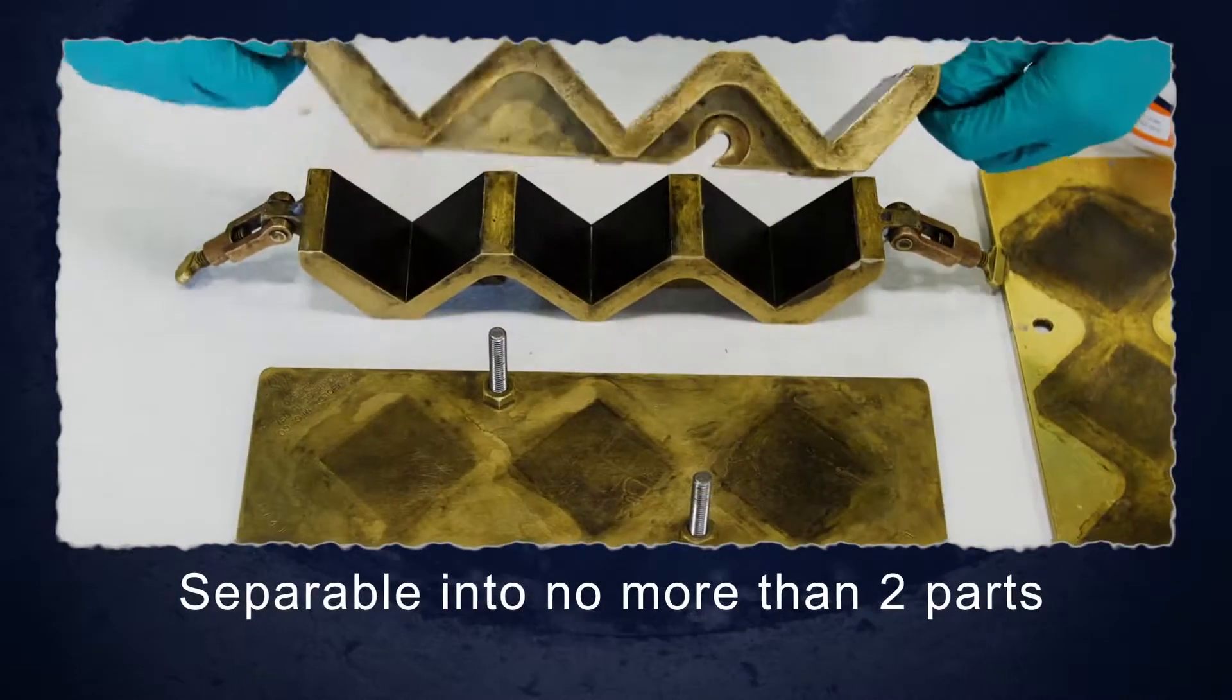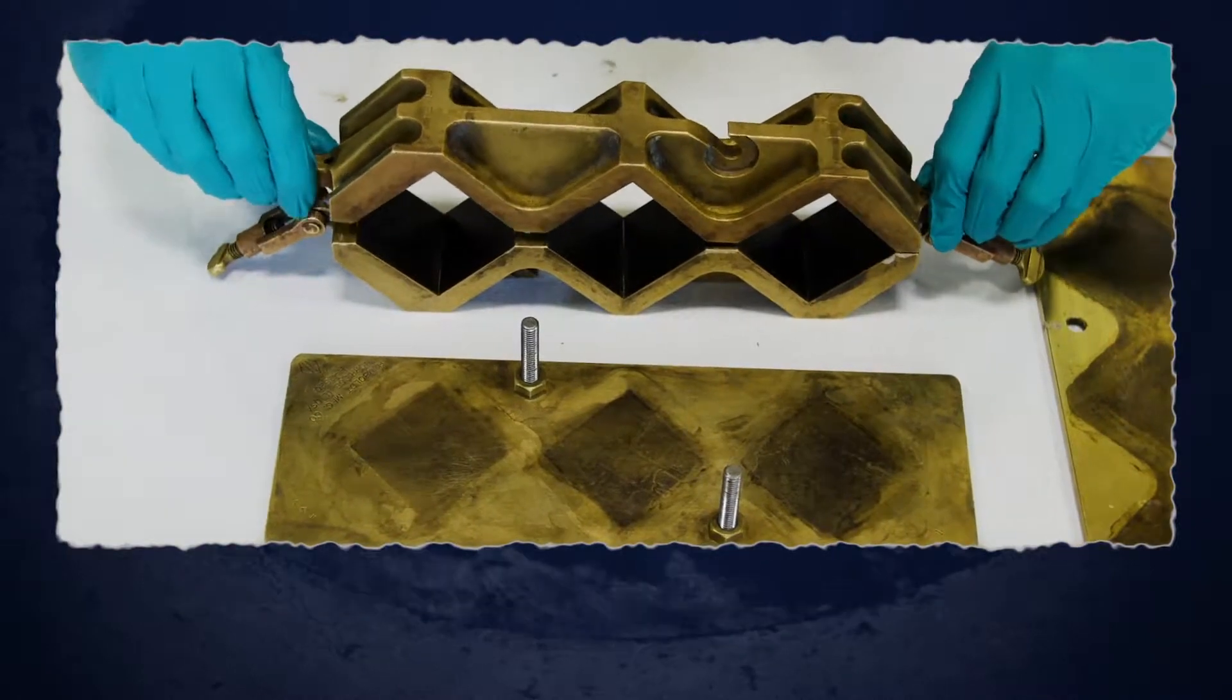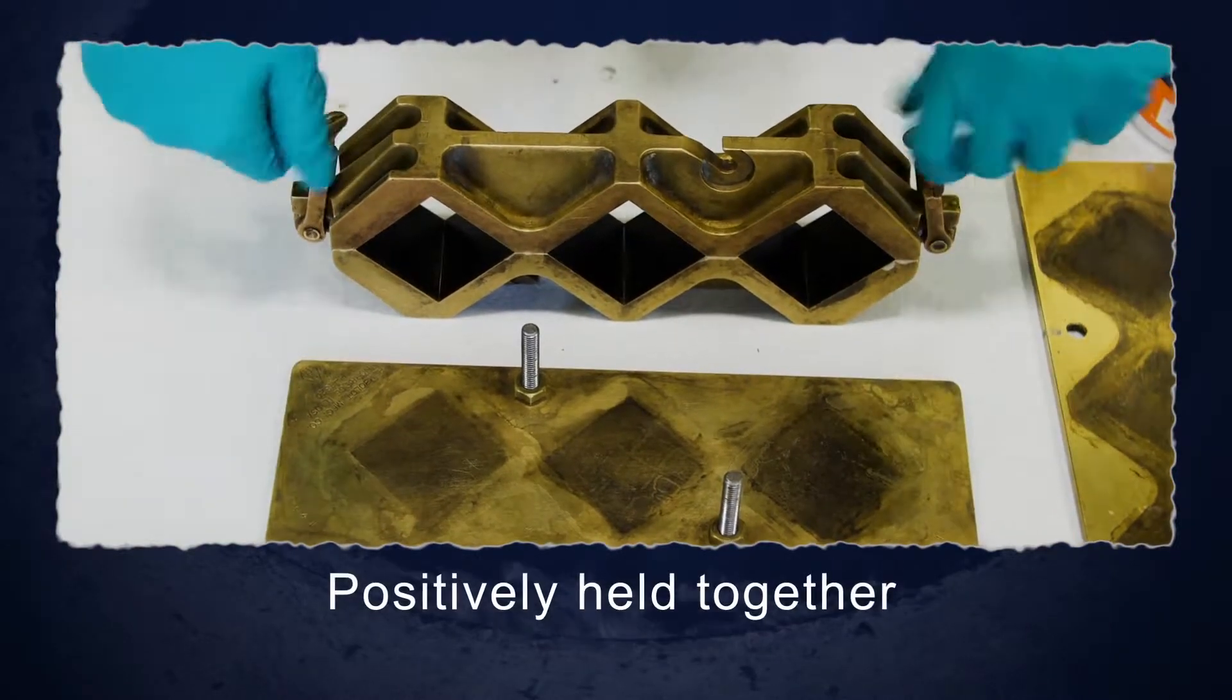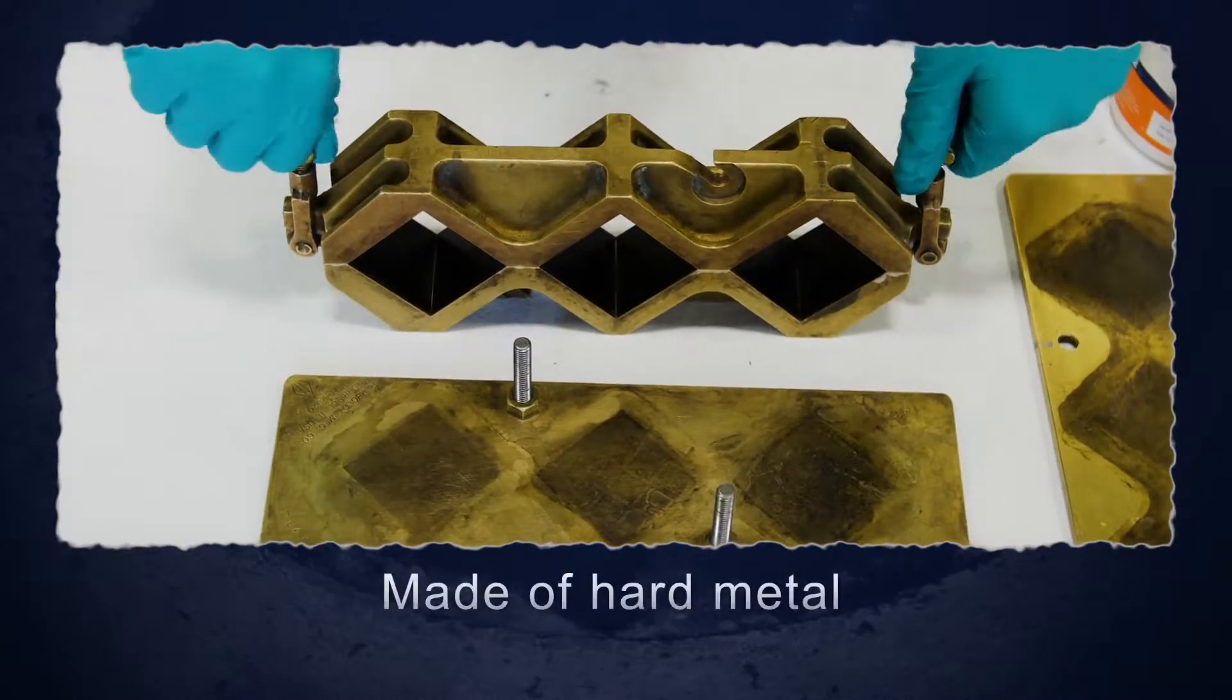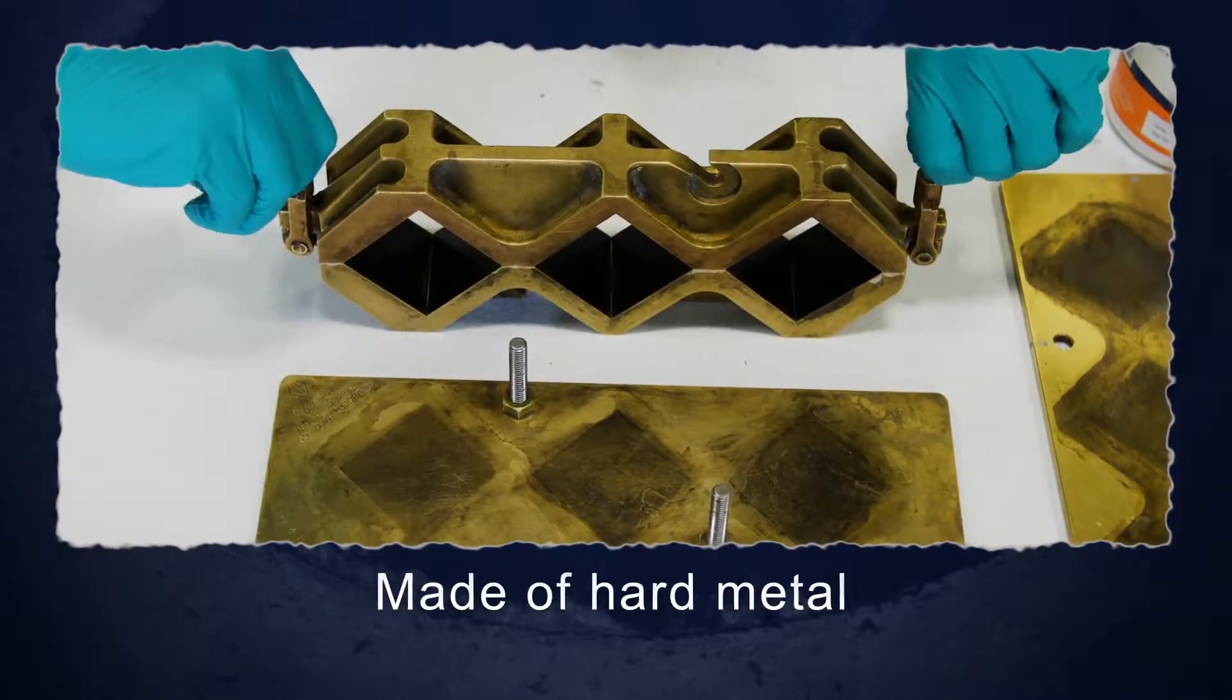Mold should be separable into no more than two parts and should be positively held together. The mold should be made of hard metal not attacked by cement mortar.